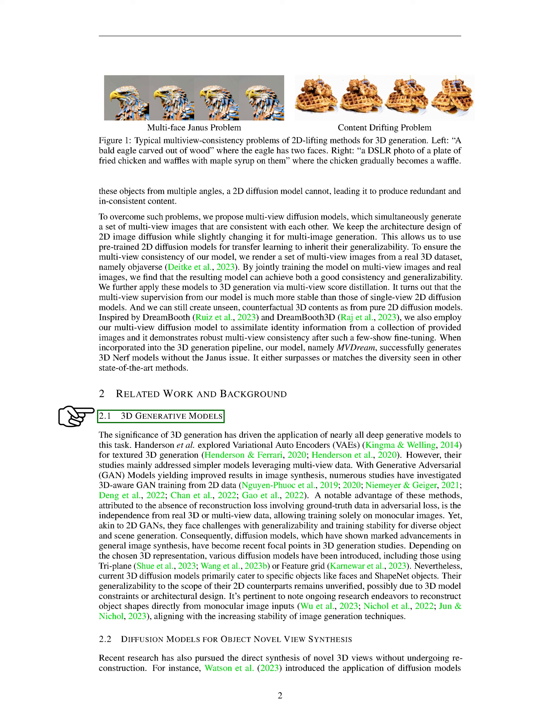As a result, diffusion models, which have made significant strides in general image synthesis, have become a recent focus in 3D generation studies. Depending on the chosen 3D representation, various diffusion models have been developed, including those using triplane or feature grid. However, current 3D diffusion models are mainly designed for specific objects like faces and ShapeNet objects. Their ability to generalize to the same extent as their 2D counterparts remains improving, possibly due to constraints in the 3D model or architectural design.